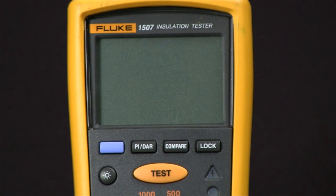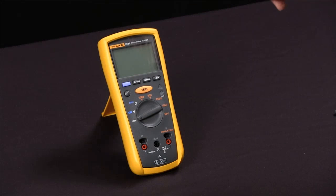Polarization index, which is a 10 minute to 1 minute ratio time test, and dielectric absorption ratio, which is a 1 minute to 30 second test.